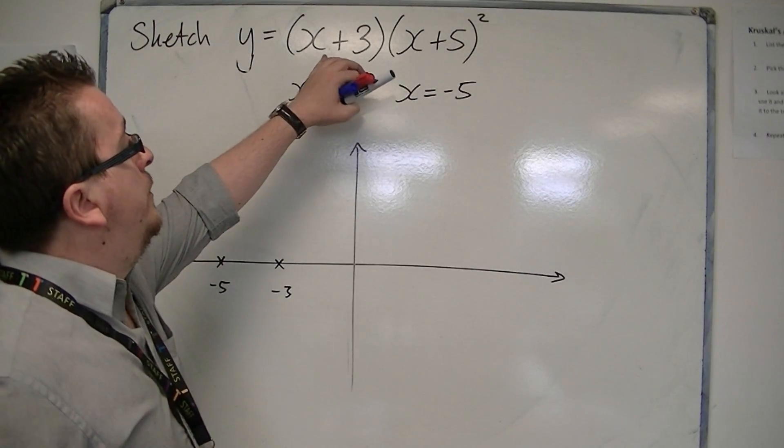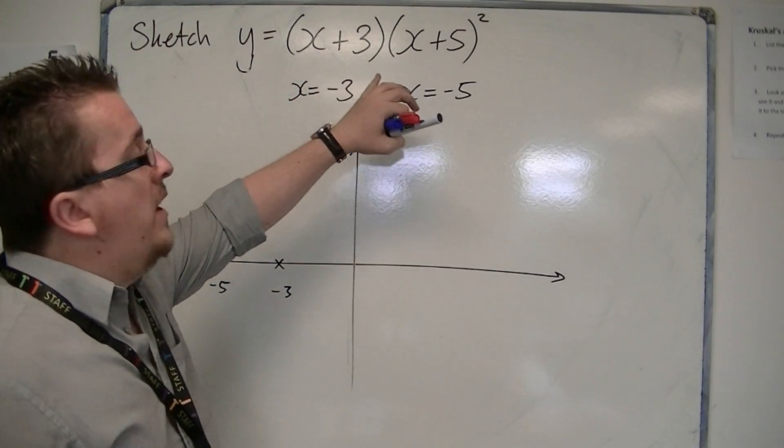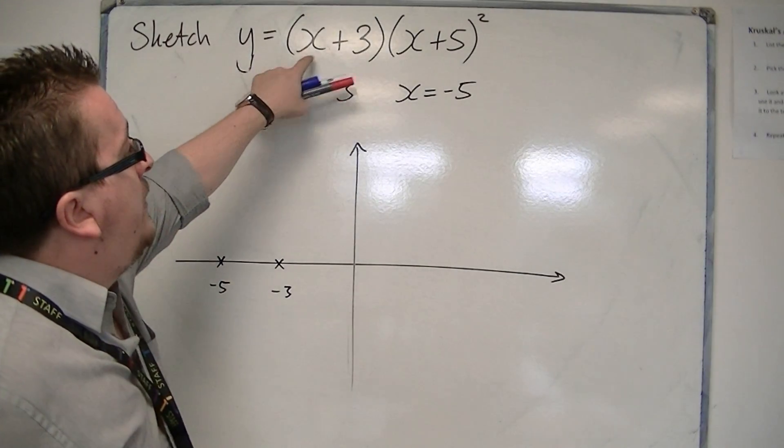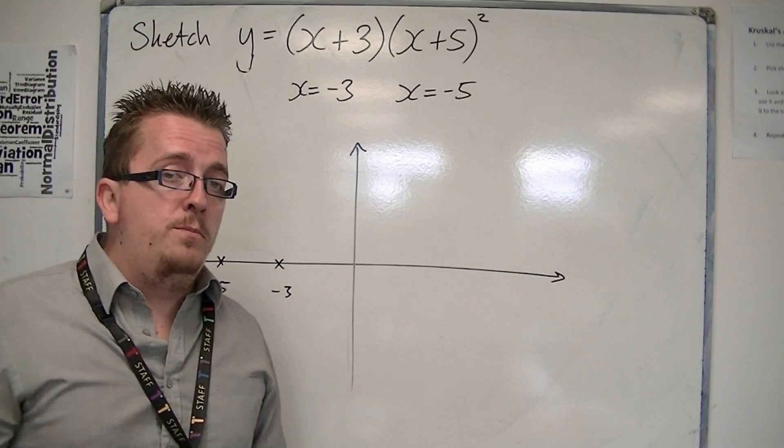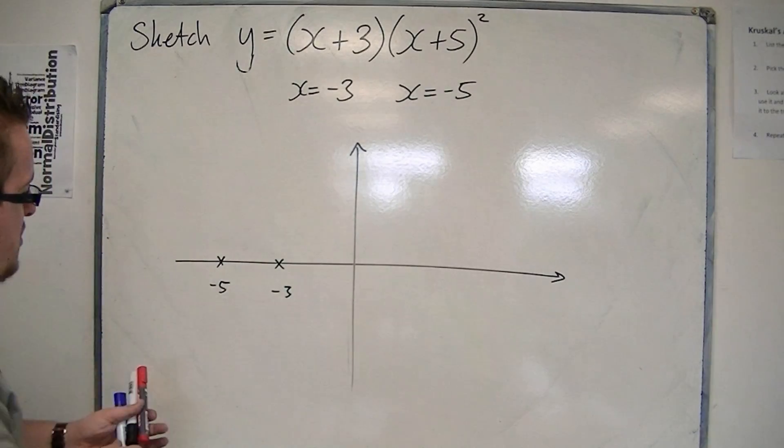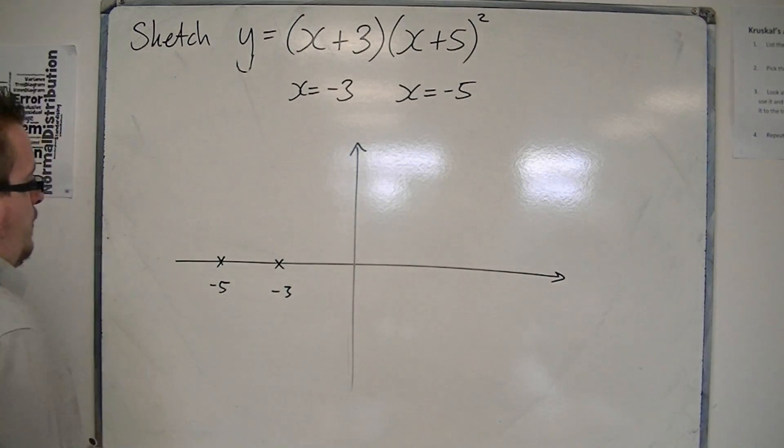In going back to is it a positive or negative parabola, you would have x times x times x. So it's x cubed, so the number in front of the x cubed is 1, which is positive, so you would start from the bottom left.